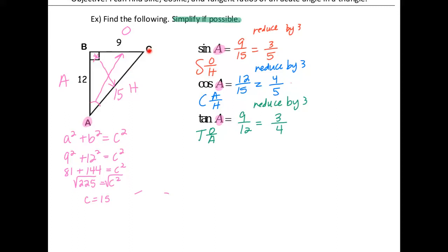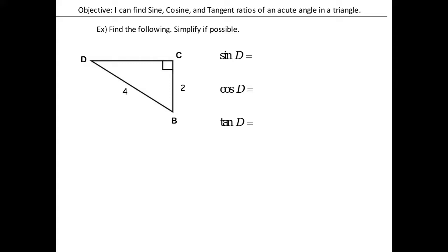You're going to have a missing side today, so to find it you'll have to do the Pythagorean theorem. Once you do the Pythagorean theorem, you have all three sides, and then you can do sine, cosine, and tangent using SOHCAHTOA. Let's look at the next example. We have side CB is 2, side DB is 4, and we're missing another side. First figure out which side is which: across the 90 degrees is the hypotenuse. We're looking at angle D, so directly across from angle D is the opposite side. We're actually missing the adjacent side this time.